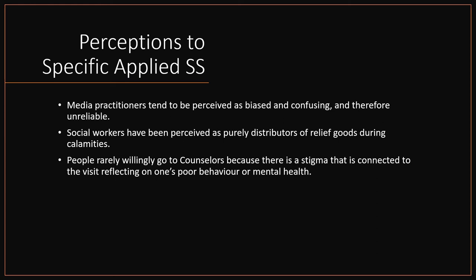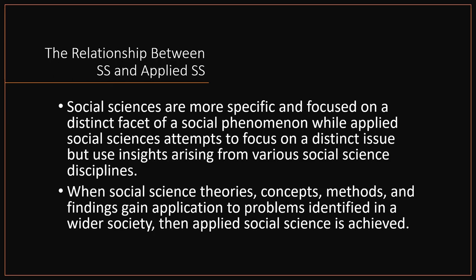And for you, the humanities and social science student, to make informed choices about your future field of study. Social sciences and applied social sciences are connected to each other in the following ways: social sciences are more specific and focused on a distinct facet of the social phenomenon, while applied social sciences attempt to focus on a distinct issue but use insights arising from various social science disciplines. When social science theories, concepts, methods and findings gain application to problems identified in a wider society, then applied social science is achieved.